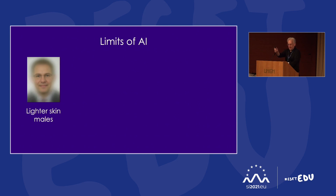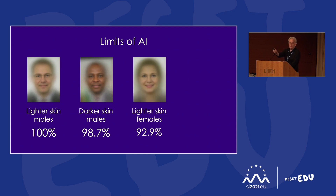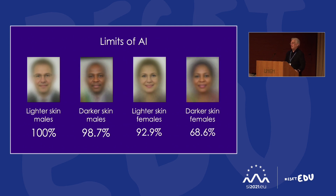Here's another example from Amazon's product called Rekognition — facial recognition. For someone like me, a lighter-skinned male, it's 100% accurate. However, for darker-skinned males, not quite so good. Lighter-skinned females, even worse. Darker-skinned females — embarrassing. You could argue it's early days and we're getting better. But I would ask: even when this is working accurately across everybody, do we really want face recognition to be throughout society in all the places we currently see it? I question that.